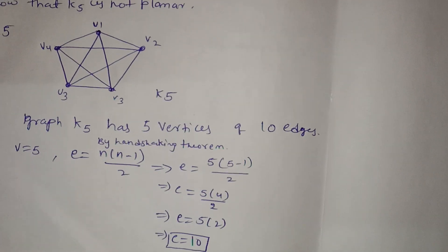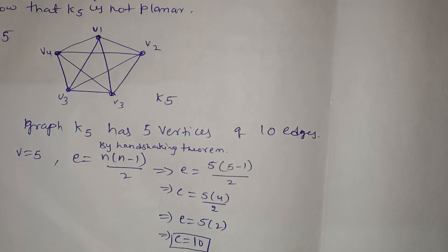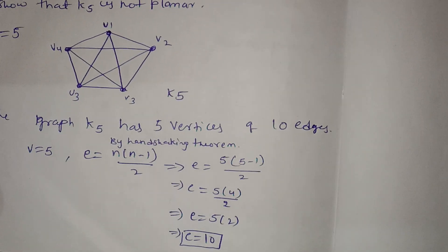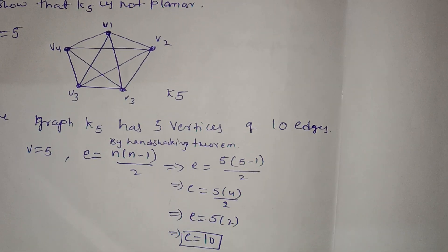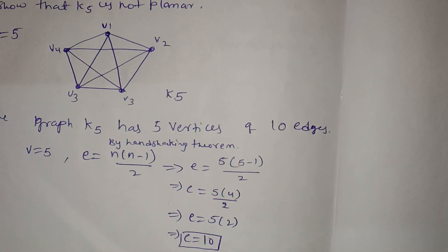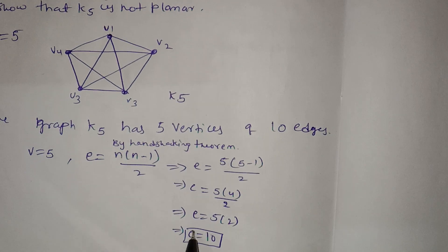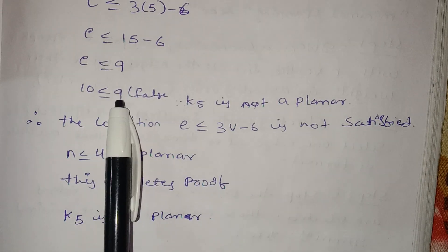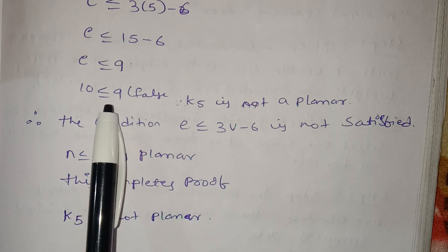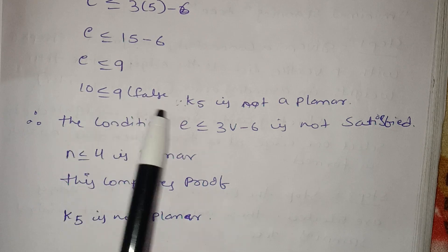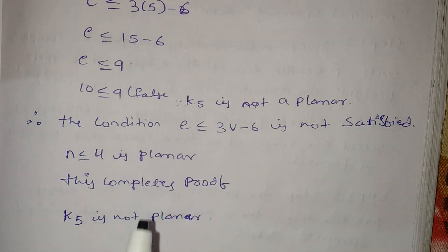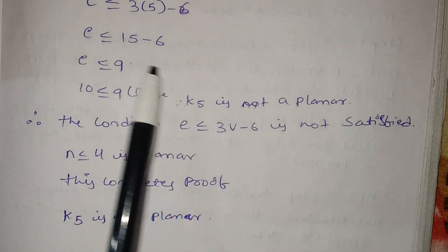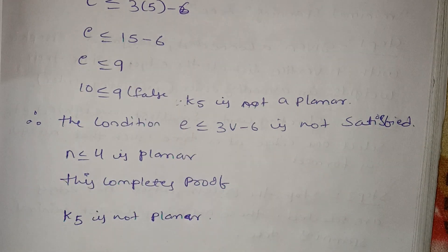But E is 10. So 10 is less than or equal to 9 — but this is a false statement. We have E equal to 10, which is not less than or equal to 9. This is a contradiction.